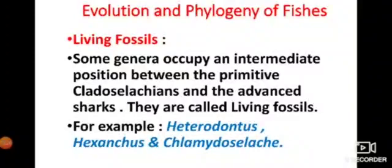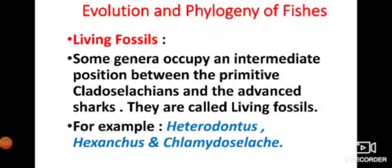Living fossils are very important for studying evolution and phylogeny. Living fossils are organisms which retain some ancestral characters while also possessing characters of present-day species. Examples of living fossils among cartilaginous fishes include Heterodontus, Hexanchus, Chlamydoselachus, and Cladoselache.